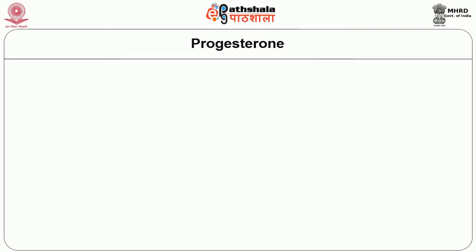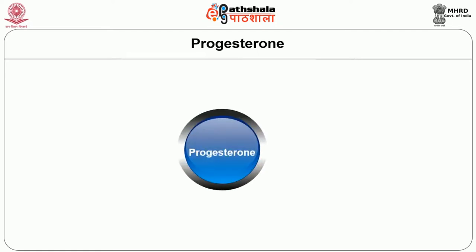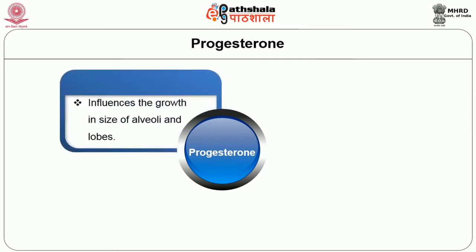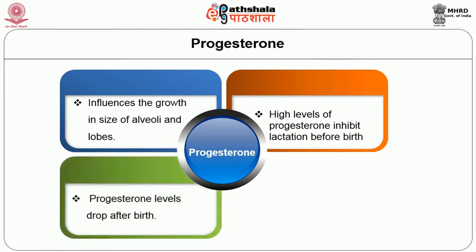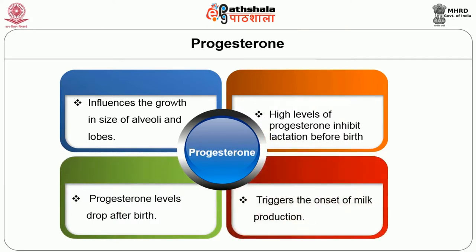We will now discuss the role of each hormone in milk secretion and reflex action. First, progesterone: progesterone influences the growth in size of alveoli and lobes. High levels of progesterone inhibit lactation before birth, and progesterone levels drop after birth, triggering the onset of milk production.